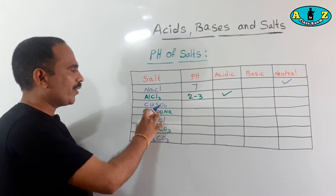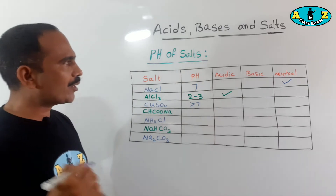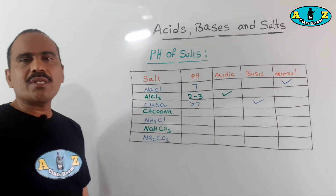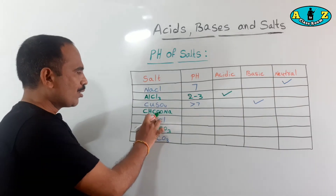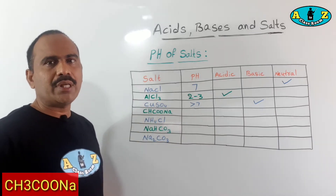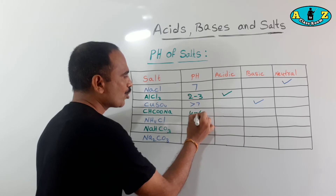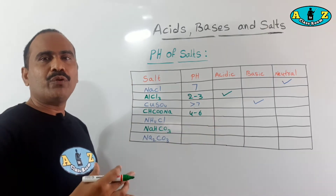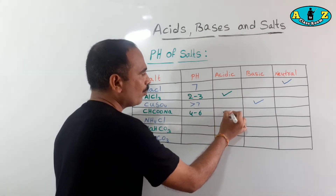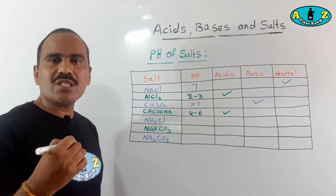The next salt is copper sulfate. Its pH value is more than 7, which means it is basic in nature — copper sulfate is a basic salt. The next salt is sodium acetate. Its formula is CH₃COONa and its pH value is 4 to 6. Between 4 to 6 means it is below 7, so its nature is acidic in nature.